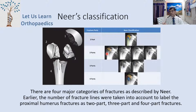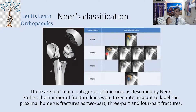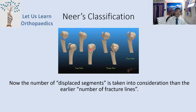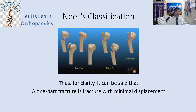There are four major categories as described by Neer. Previously, the number of fracture lines were used to label proximal humerus fractures as two-part, three-part, or four-part. Now, the number of fracture fragments is taken into consideration. A one-part fracture is a fracture with minimal displacement. This diagram shows how two-part, three-part, and four-part fractures look.